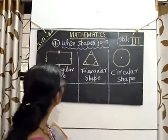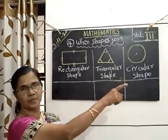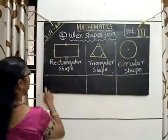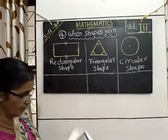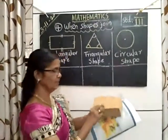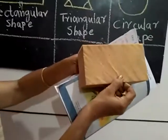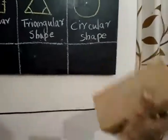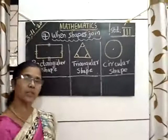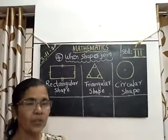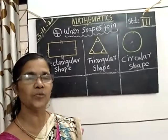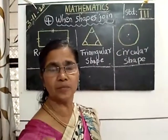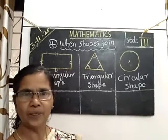Now we have to find out some examples for each shape. Can you say some examples for triangular shapes? One I told you — this blackboard is in rectangular shape. See this duster — this side is rectangular shape, this side also rectangular shape. Every side is rectangular shape. You can find out some other examples at home and write them in your notebook. Write five examples for each shape.